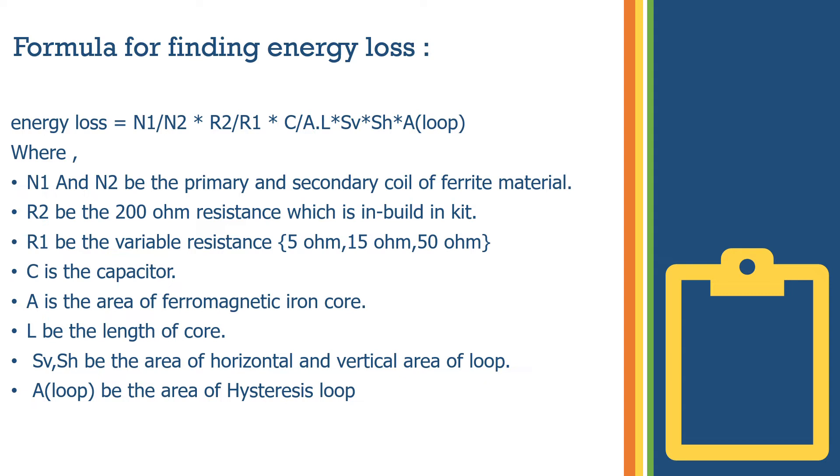SV and SH are the vertical and horizontal dimensions of the loop. Area of loop is the area of the hysteresis loop.